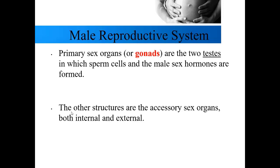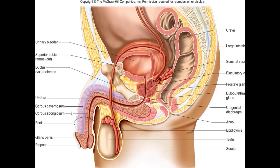The primary sex organ for the male reproductive system are the testes. Another term for primary sex organ is gonad — a generic term that means the primary sex organ in general. For males the gonad are the testes, and for females the gonads are the ovaries. Everything else in the reproductive system, whether internal or external, if it's not the gonad it's considered to be an accessory.